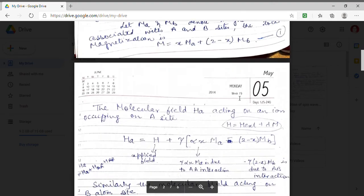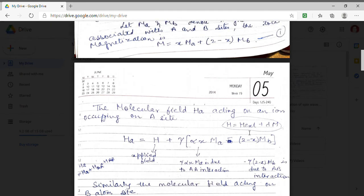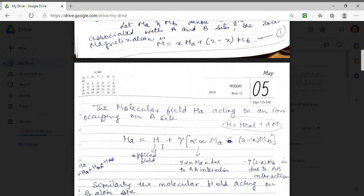The molecular field acting on iron which occupy A site can be obtained as H is equal to external H plus lambda M. This is the Wiese field according in accordance with the Wiese field theory. Here we have expressed the external that means applied field by capital H and the field at A site is HA.